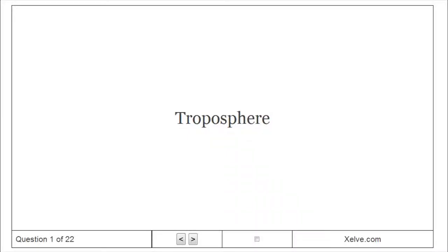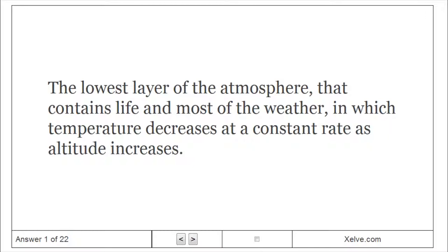Troposphere: The lowest layer of the atmosphere that contains life and most of the weather, in which temperature decreases at a constant rate as altitude increases.